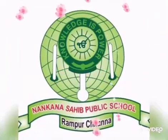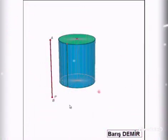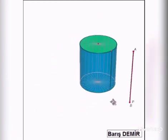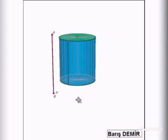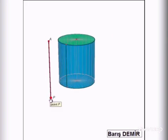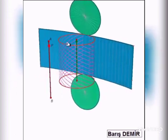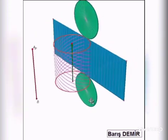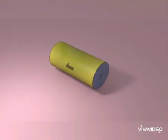Hello students, today we are going to discuss the total surface area of a cylinder. To find the total surface area of a cylinder, we have to unfold a cylinder by cutting it parallel to its vertical axis.